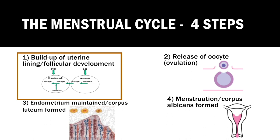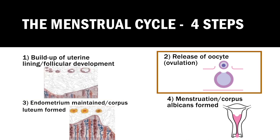LH acts on theca cells and increases the production of androgens. The oestrogen which is produced promotes the development and proliferation of the endometrium. Step two is ovulation, occurring approximately on day 14 of a 28-day cycle. The negative feedback of oestrogen on the hypothalamus and pituitary, which decreases FSH and LH, is suddenly reversed by very high oestrogen levels, triggering a small FSH and large LH surge. Prostaglandins promoted within the Graafian follicle cause it to rupture and release the oocyte.